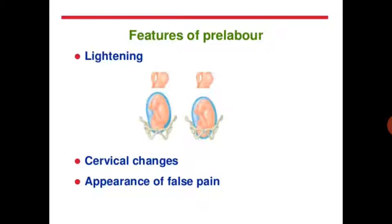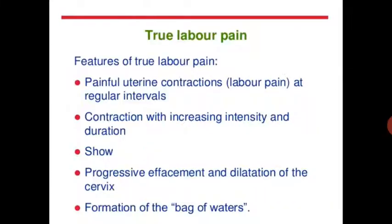Pre-labor features include lightening, cervical changes, and appearance of false pain. True labor pain features: painful uterine contractions at regular intervals, contractions with increased intensity and duration, show is present, progressive effacement and dilation of the cervix, and formation of the bag of waters.